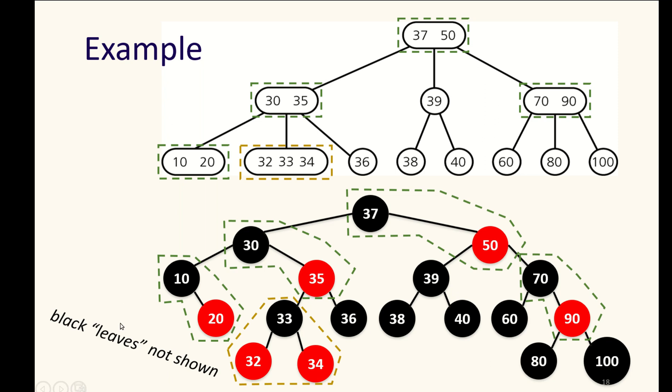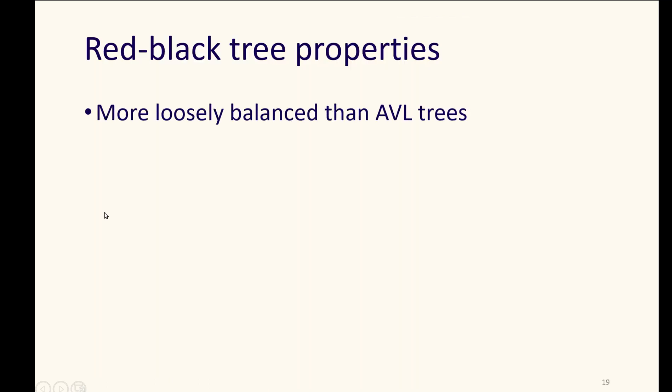The leaves, meaning those nulls off the edge, are not shown here. So it is more loosely balanced, a red-black tree is, than an AVL tree. It's not going to be as nicely balanced, and even AVL trees were not strictly perfectly balanced either.